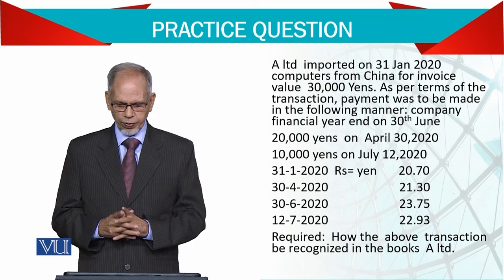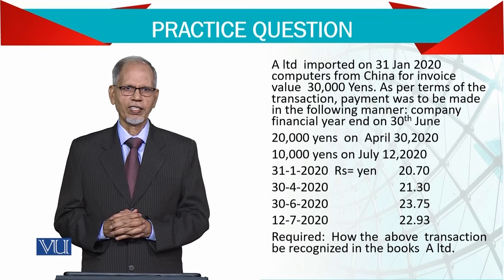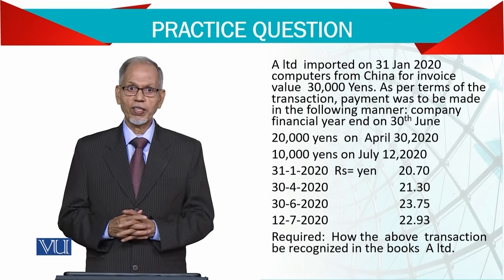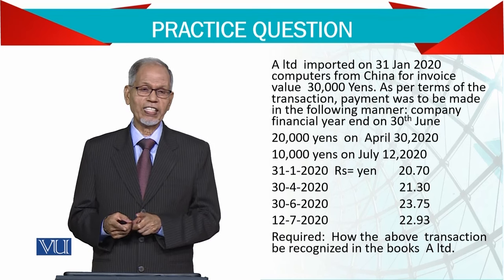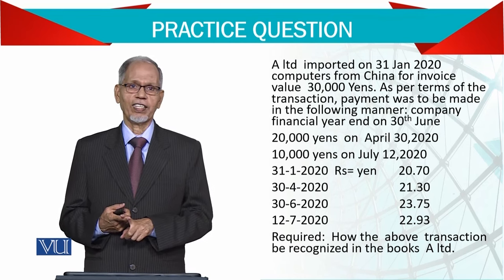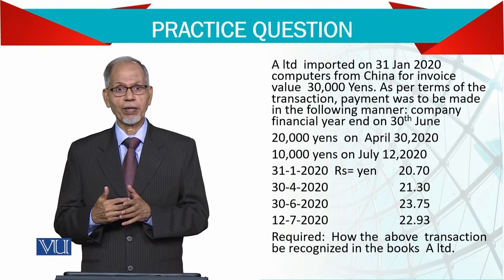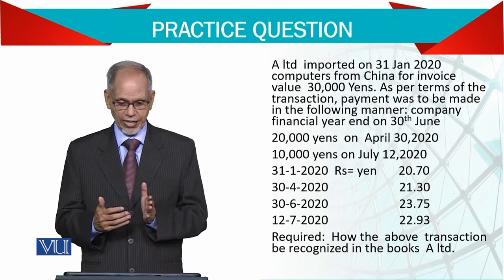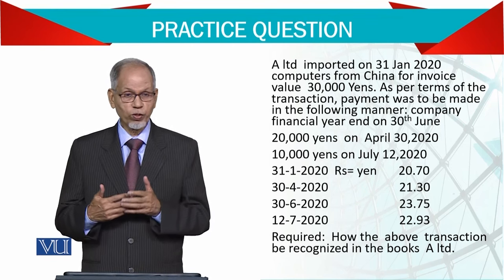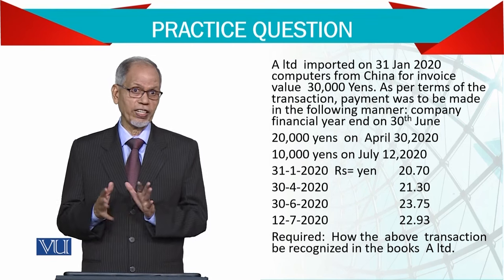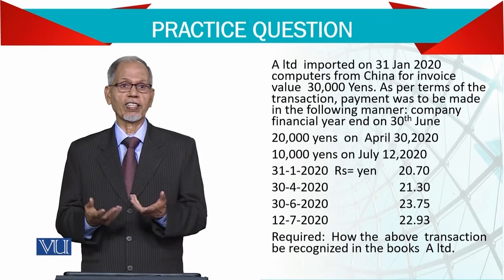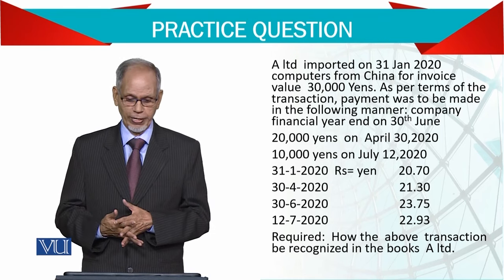When payment comes due, the rate given is 21.3. So payment is made at this rate. You need to check — the payment being made is 10,000 yen, multiplied by the rate to find the rupee amount.